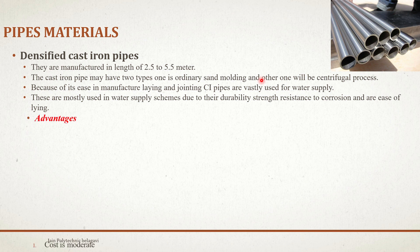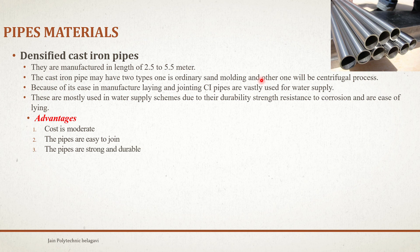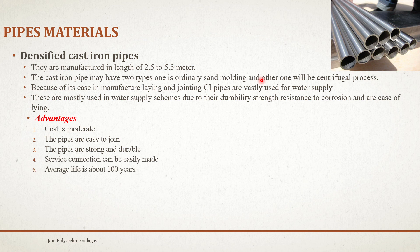Some advantages of CI pipes: the cost is moderate; the pipes are easy to join; they are strong enough to take any type of load, whether impact or variable loads; they are durable in nature; and service connections can be easily made. The average design life is about 100 years, though practically around 75 to 80 years of lifespan is typical.